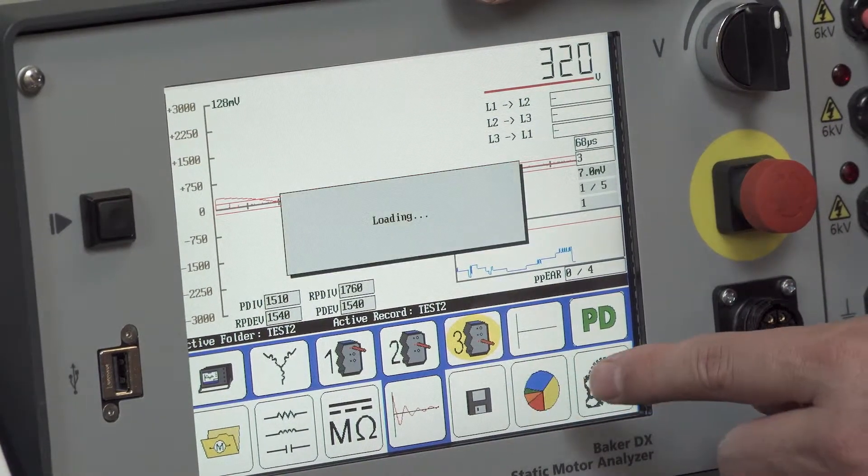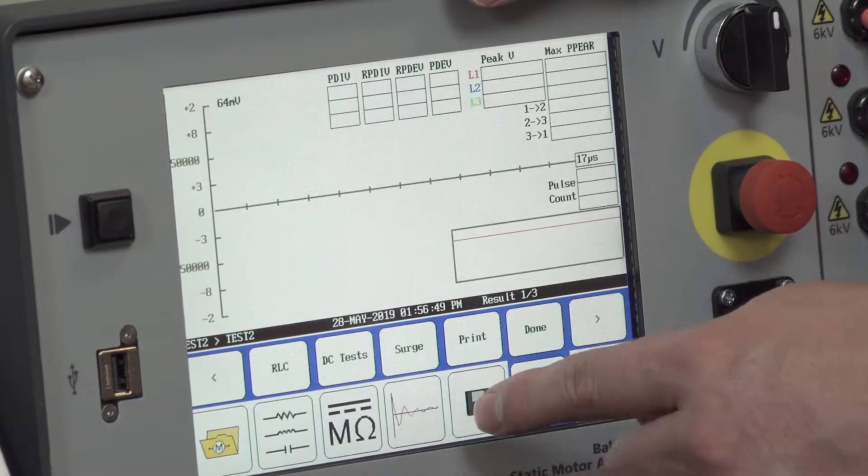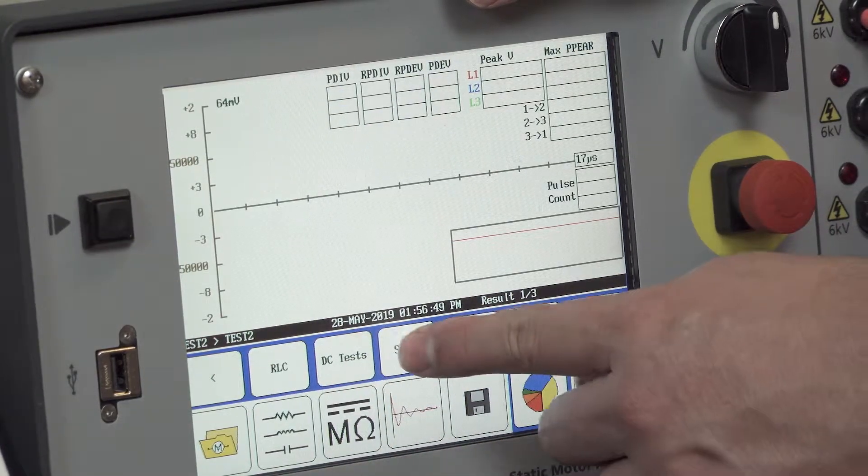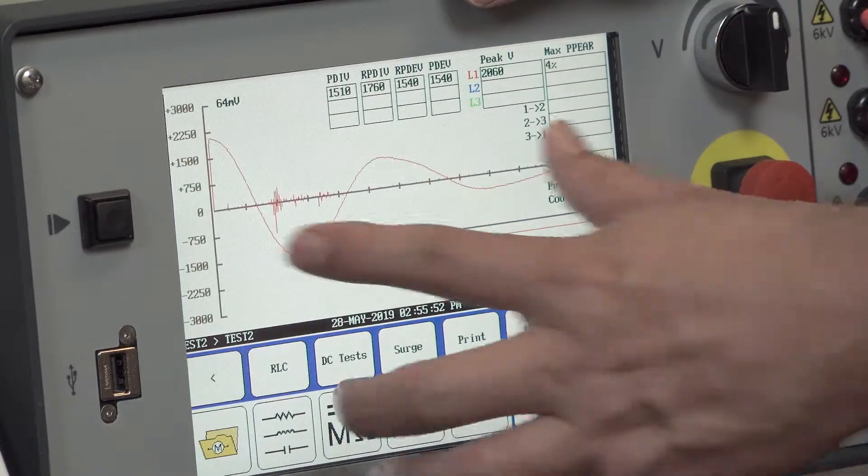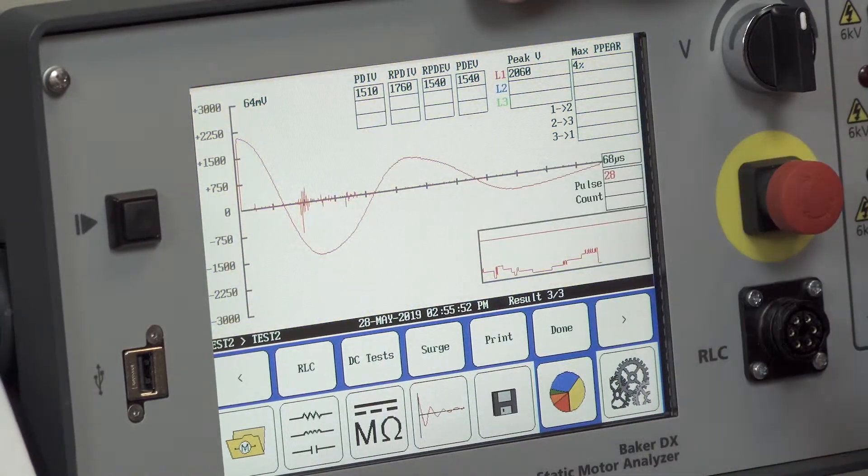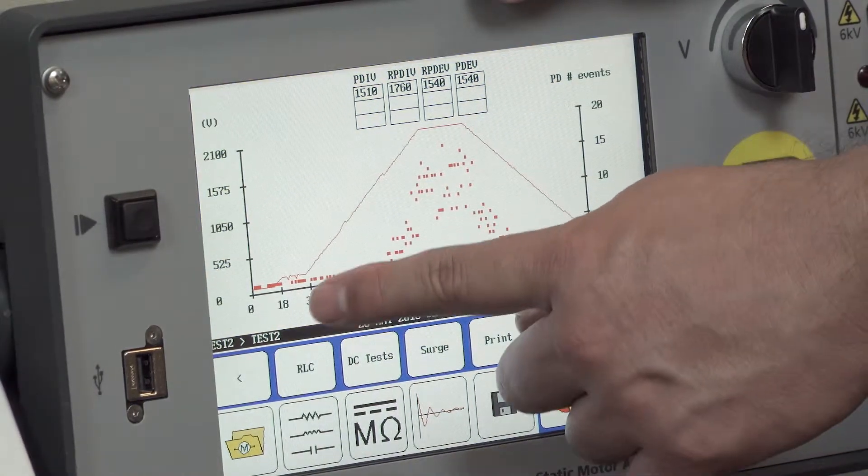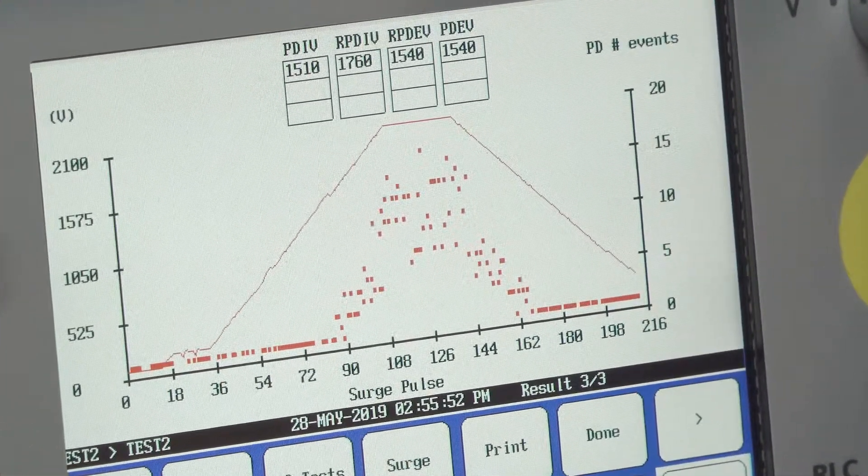And I'll just go into the reporting real quick and show you. Select the surge test. And the last one we did was this partial discharge surge. And if I click this screen, I can see the house plot that was also generated by the surge and partial discharge detection.